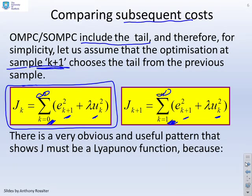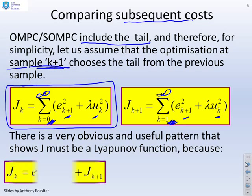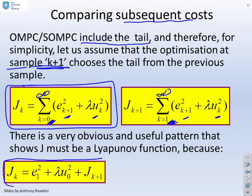Now, this gives us a very obvious and useful pattern, which tells us that J must be Lyapunov, because by comparing these two J's, I get this identity: J_k equals e_1 squared plus lambda u_0 squared plus J_{k+1}.